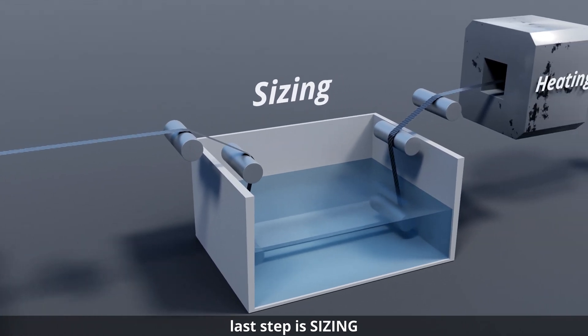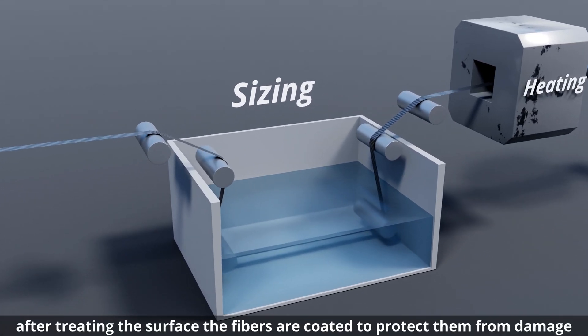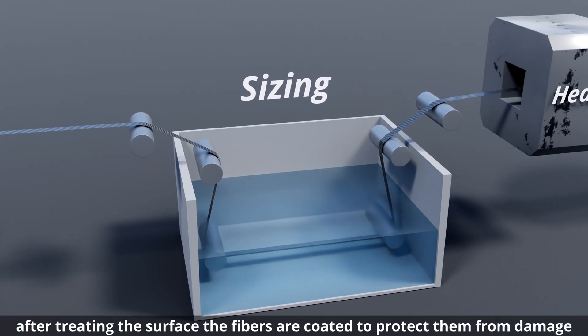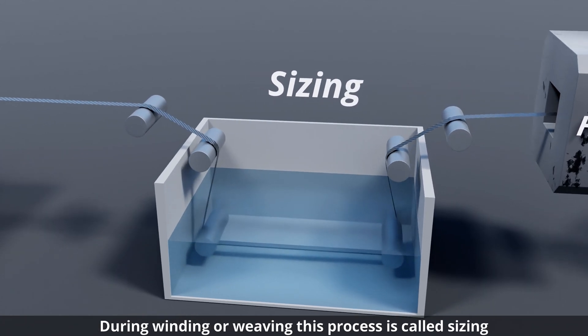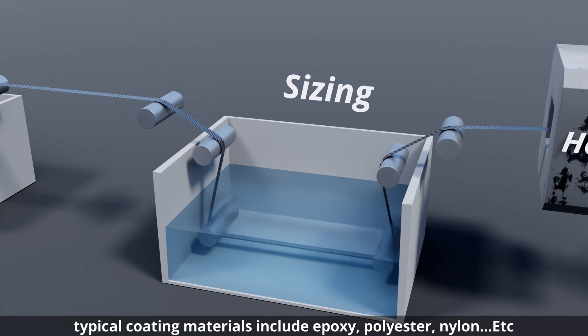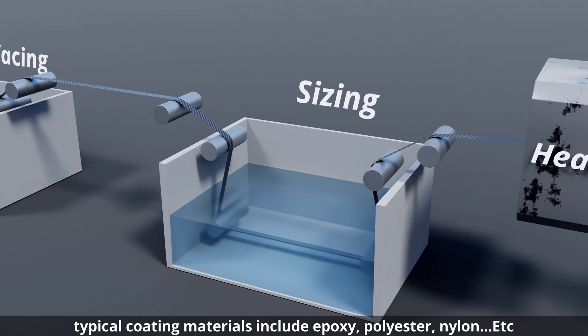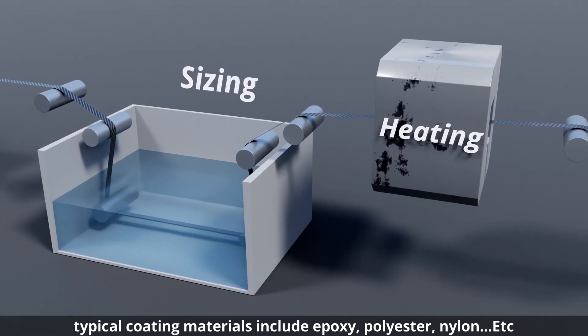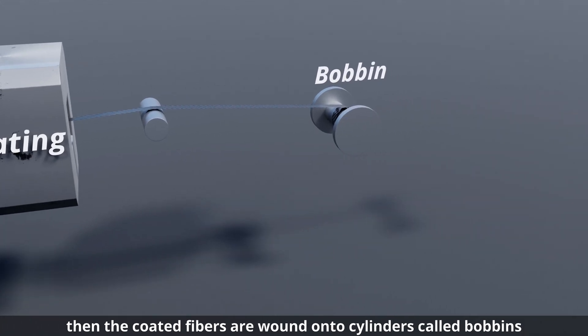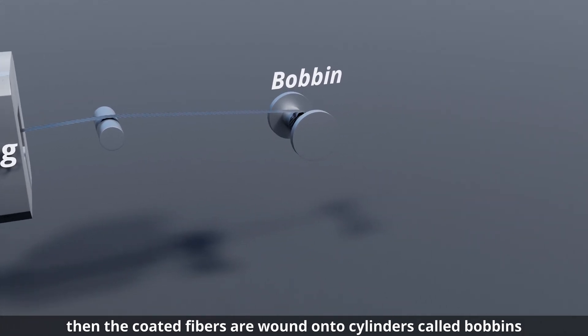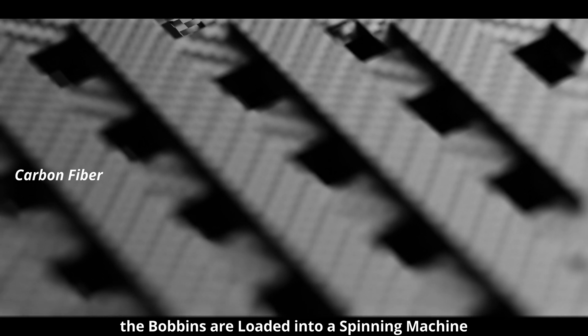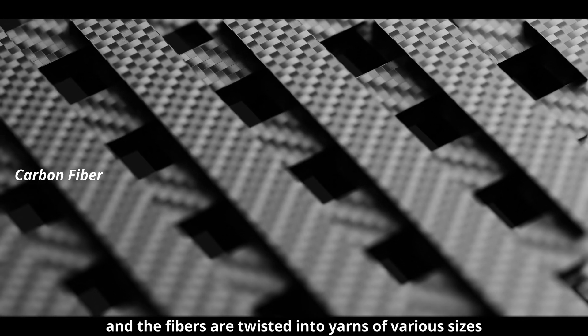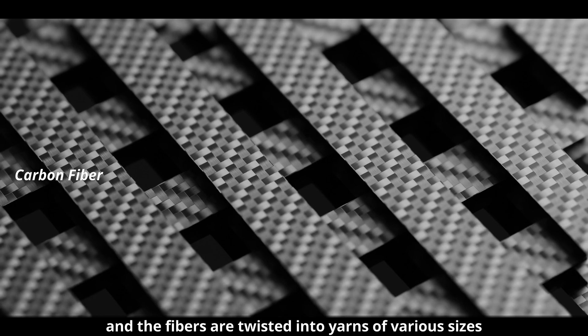The last step is sizing. After treating the surface, the fibers are coated to protect them from damage during winding or weaving. This process is called sizing. Typical coating materials include epoxy, polyester, nylon, etc. Then the coated fibers are wound onto cylinders called bobbins. The bobbins are loaded into a spinning machine and the fibers are twisted into yarns of various sizes.